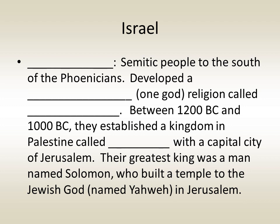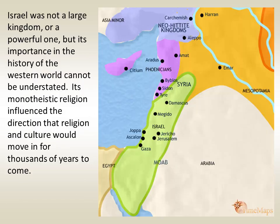Another Semitic-speaking people to the south of the Phoenicians were the Hebrews. The Hebrews were unique in that they developed a monotheistic religion — a religion with only one god — called Judaism. Between 1200 BC and 1000 BC they established a small kingdom in Palestine called Israel, with a capital city of Jerusalem. Their greatest king was Solomon, who built a temple to the Jewish god Yahweh in Jerusalem. Though Israel was not a large or particularly powerful kingdom, its importance in the history of the Western world cannot be understated, as its monotheistic religion influenced the direction of religion and culture for thousands of years.